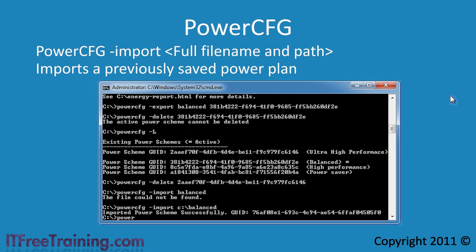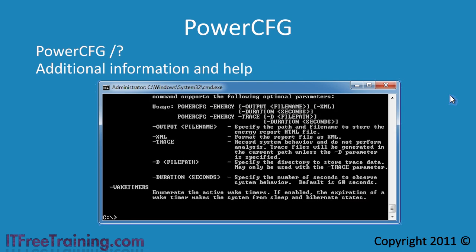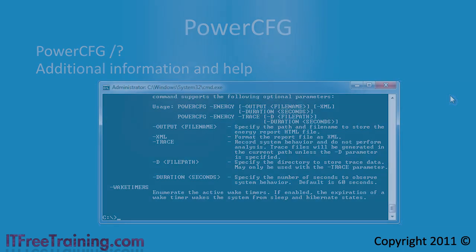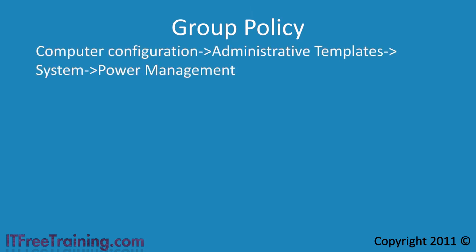Lastly, if you need additional information on the PowerCFG utility, you can run the parameter slash question mark. This will give you the help information. The PowerCFG utility gives you a lot of control over your settings. If you want to configure all the power settings in your organization in one go, you can use group policy. The settings for power configuration are found in Computer Configuration, Administrative Templates, System, and Power Management. There are a lot of settings in here — I won't go through them all because there are so many and a lot of them are self-explanatory.